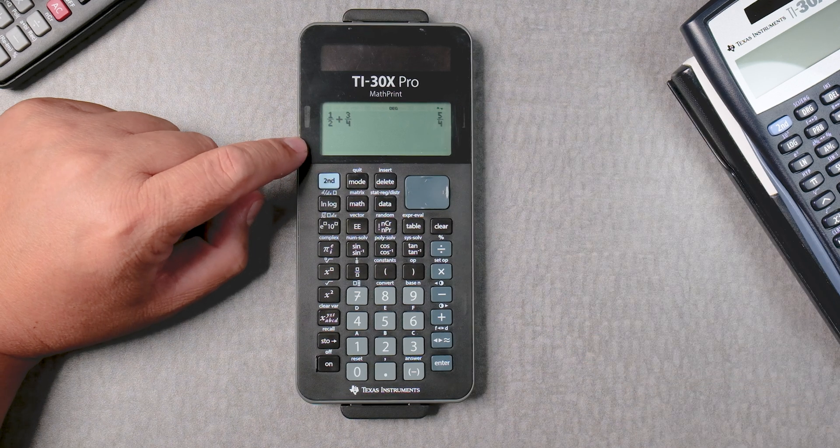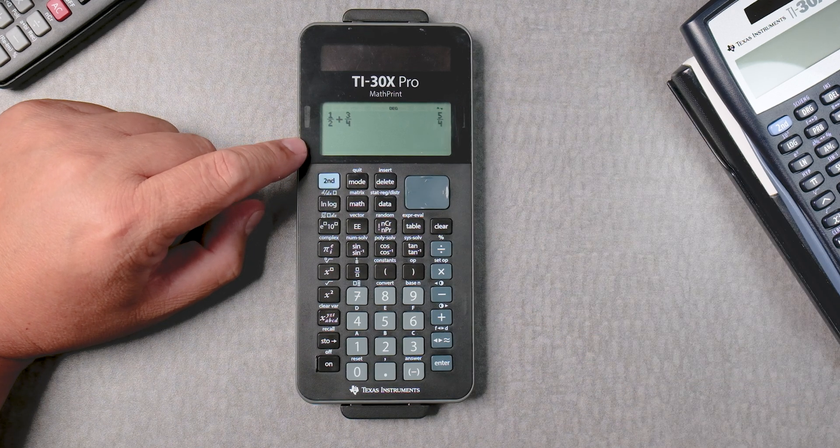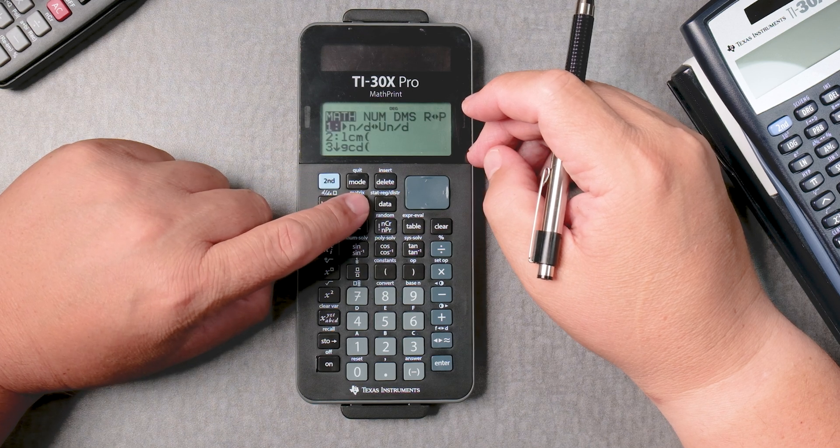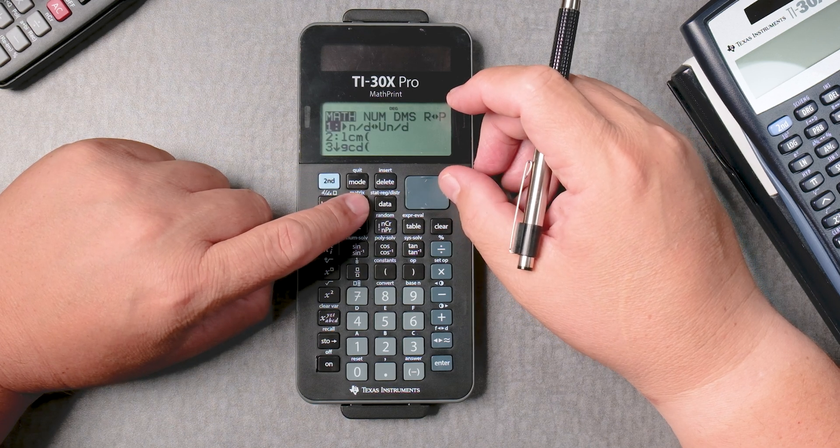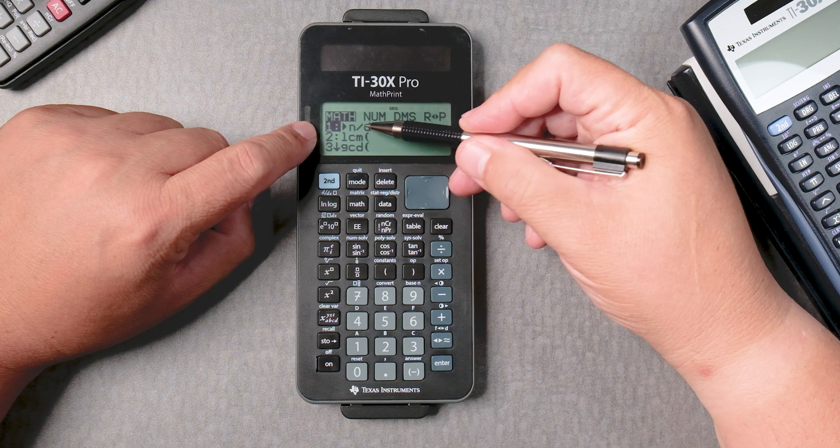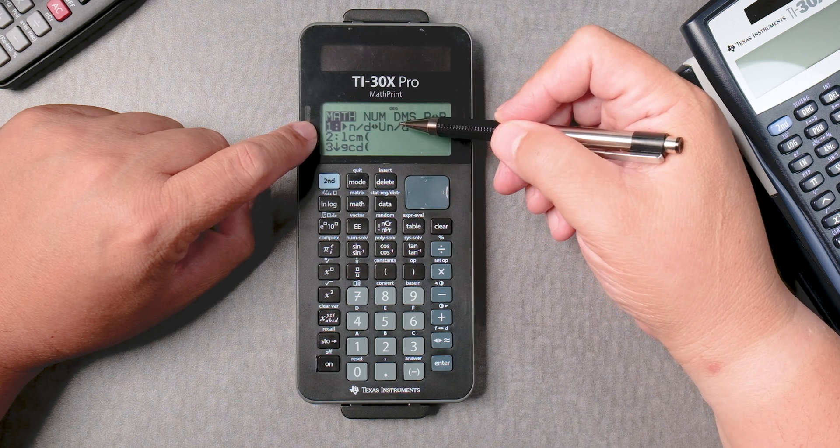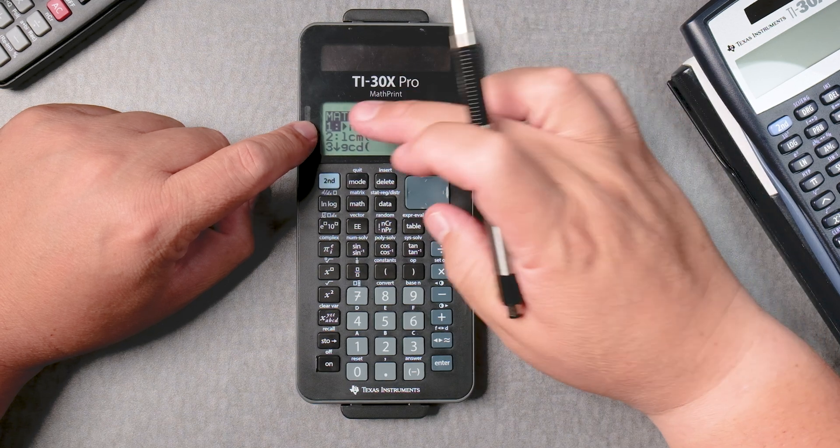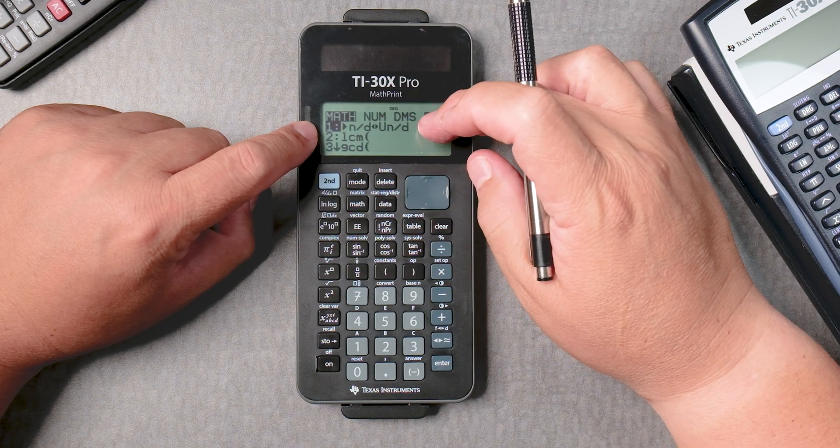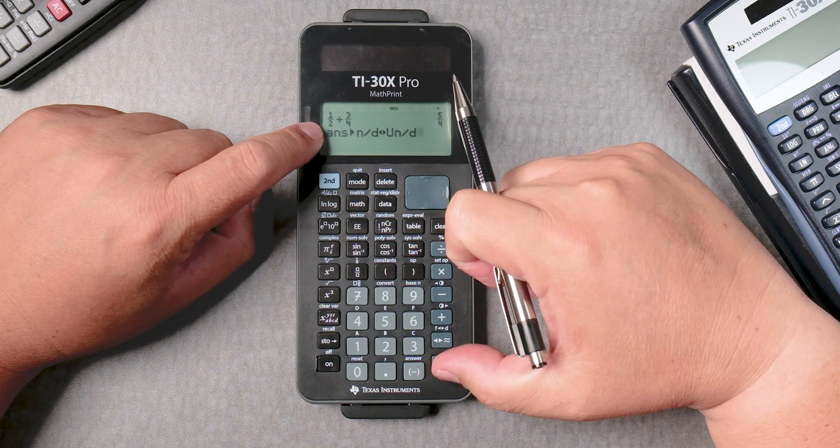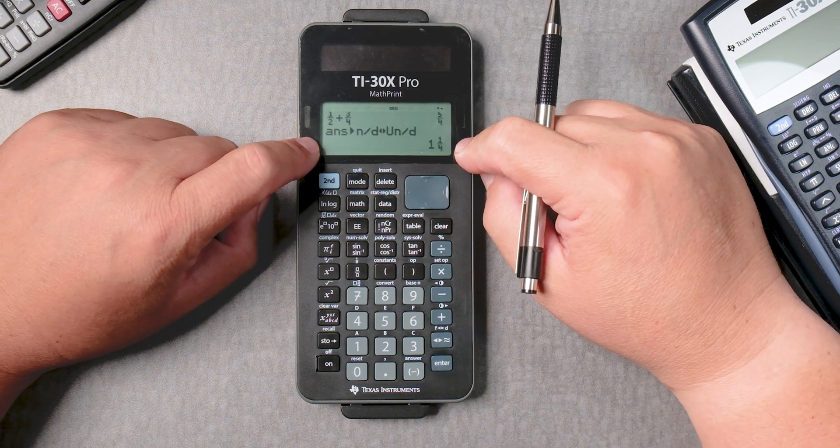Let's say I want that to be a mixed number. So let's press on Math, and you can see here it says N divided by D, or U N divided by D. So improper fraction to a mixed number, enter. Take the answer that you got previously and do the operation, one and one-fourth.